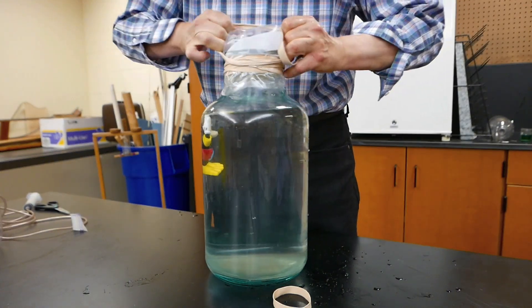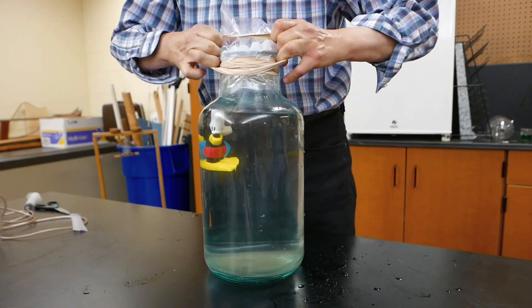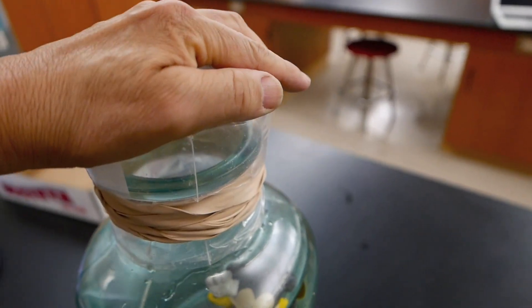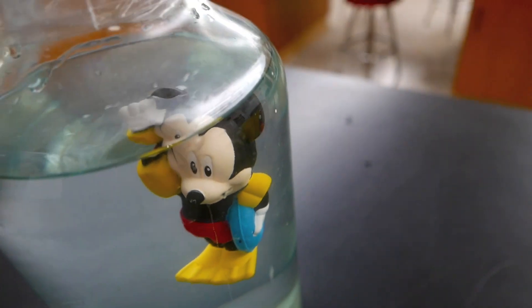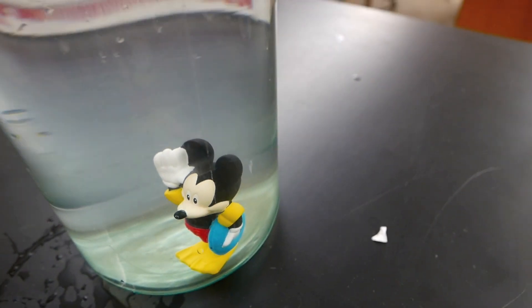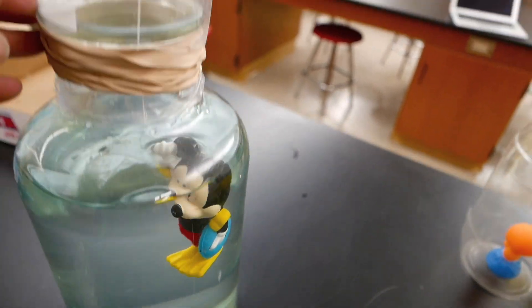Now once again we can try that same idea with this glass bottle. I have a diver inside. I have a few rubber bands on the glass bottle, the bag, and then several rubber bands over top. Push down on the bag and Mickey dives. Release it and he comes back up again.